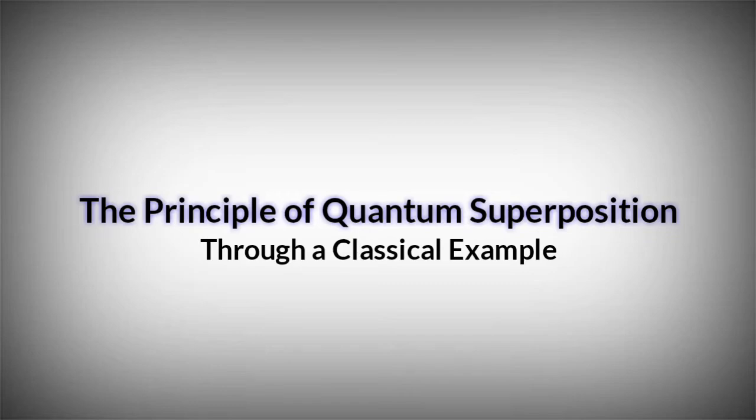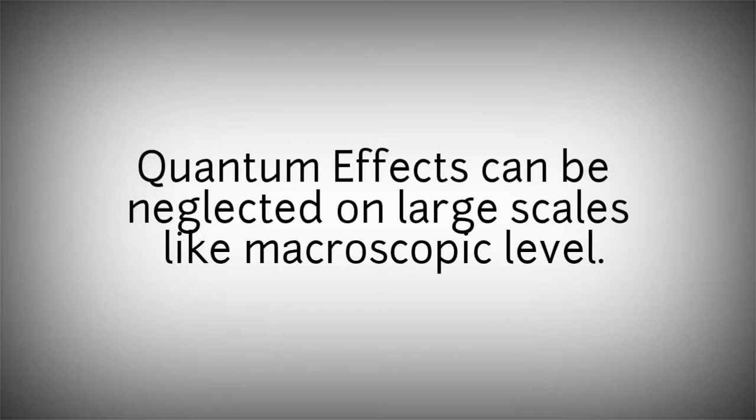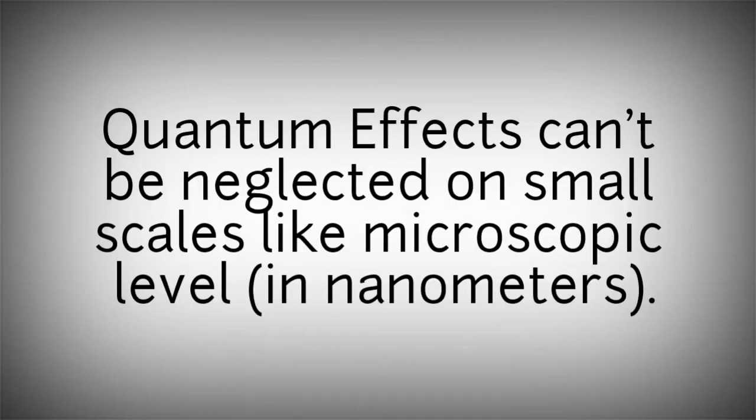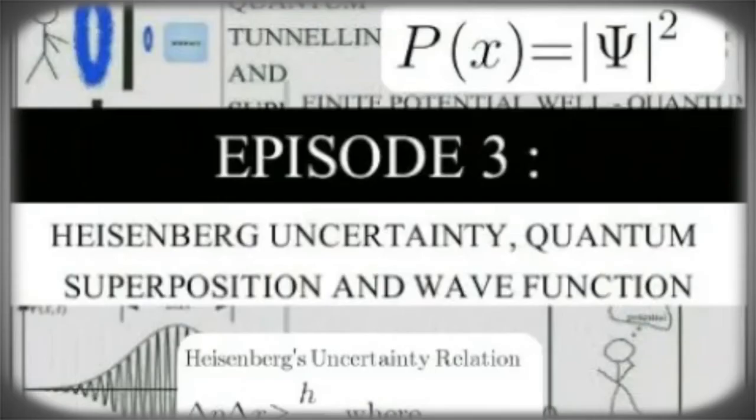In this video, we will try to understand the principle of quantum superposition. Classical physics works well at the macroscopic level but fails to explain phenomena observed at the microscopic level, like the double slit experiment.